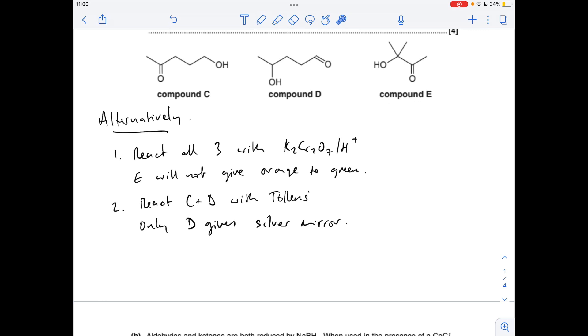So the other way you can do it is react all three with acidified potassium dichromate first. Compound E can't be oxidized because you've got a ketone and a tertiary alcohol group there so you're not going to see the orange to green color change. Equations wise you could either show the oxidation of compound C which I've already shown or the oxidation of compound D, again I've already shown that equation.